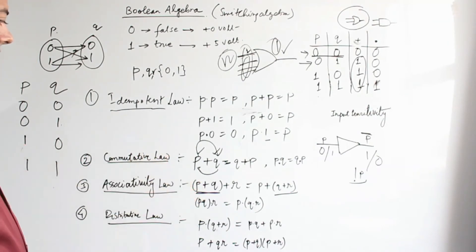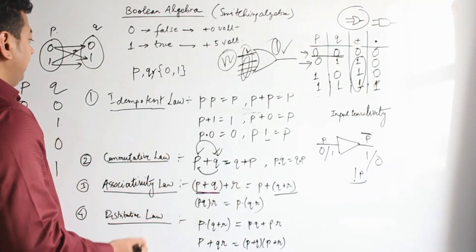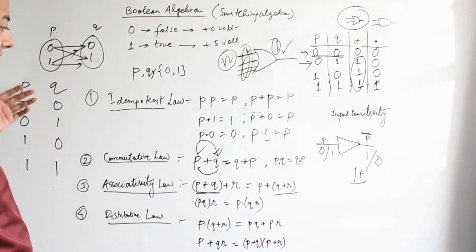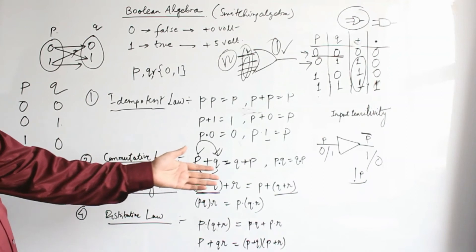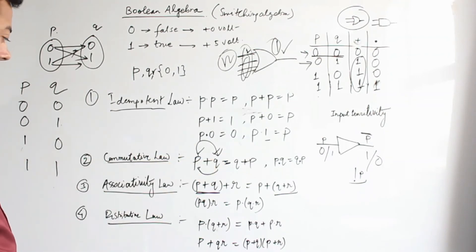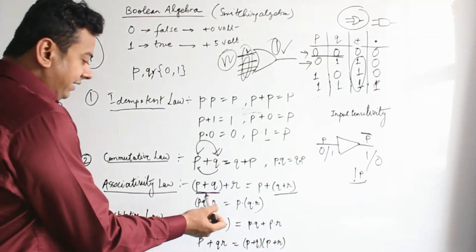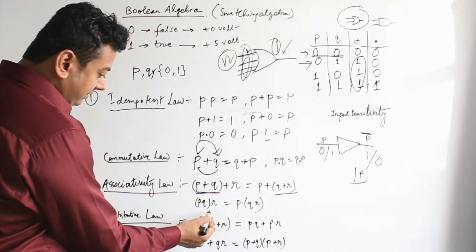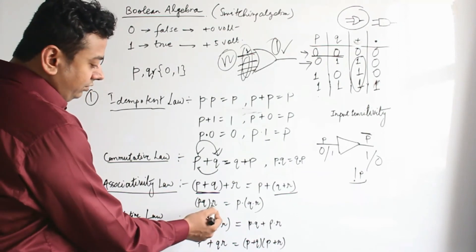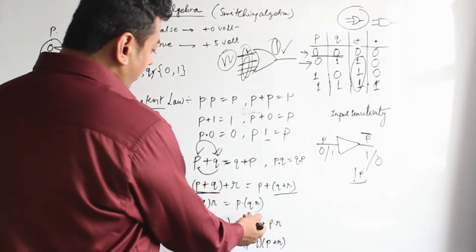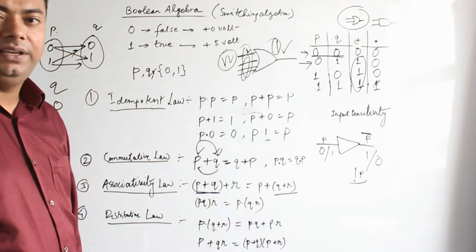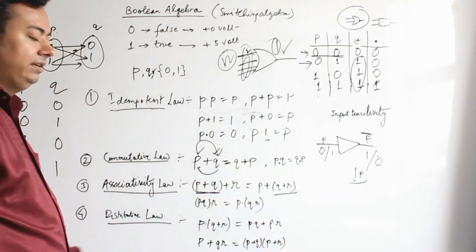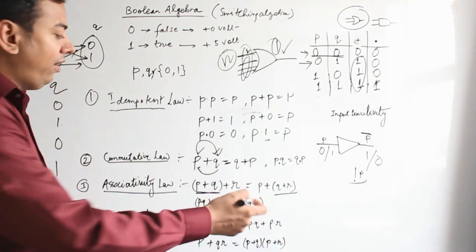You can verify associativity by taking three variables and mapping them to check if results are the same. For AND: P · Q · R = (P · Q) · R = P · (Q · R). Whether you start with Q · R and then AND with P, or start with P · Q and then AND with R, the result is always the same.